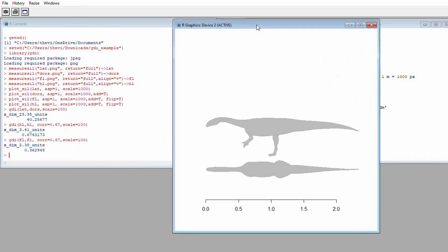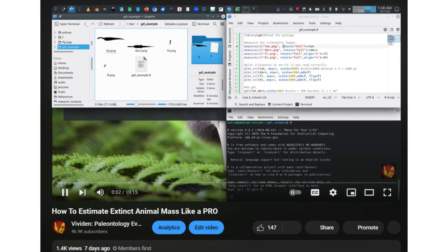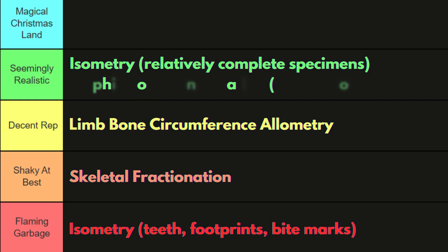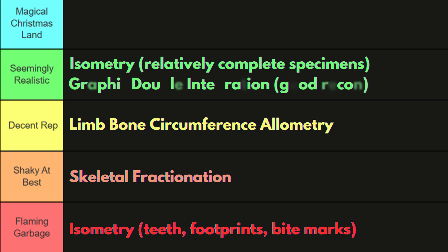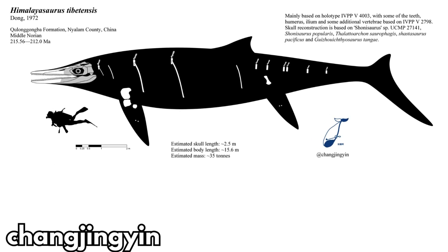Remember, this is very recon-specific. I've also included a link to a more in-depth version of this tutorial done by Darius, who also shows how to use his software to calculate center of mass and rotational inertia. GDI, as a broad category, earns a seemingly realistic score, assuming the recon you use is rigorously researched and uses comparative anatomy and muscle attachment data. It's typical practice with GDIs to use recons with minimal soft tissue, so they may result in underestimations compared to a healthy, well-fed animal.